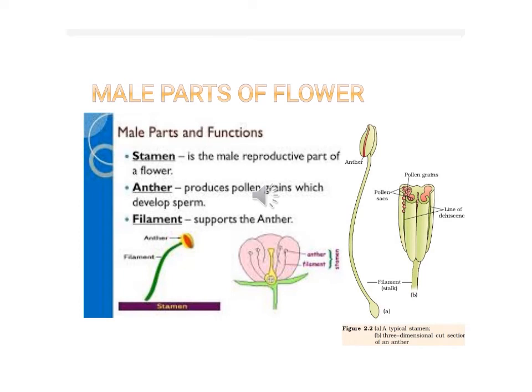The stamen is the male reproductive part of a flower. They are found just inside the petals and are usually four or six in number. Each stamen consists of a thin stalk called the filament and a two-lobed head called the anther on top. Each anther lobe has two pollen sacs filled with pollen grains, which are yellow or fine dust-like particles containing the male sex cell of the flower.